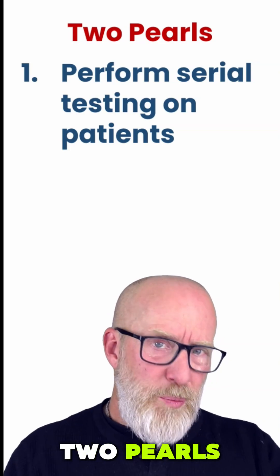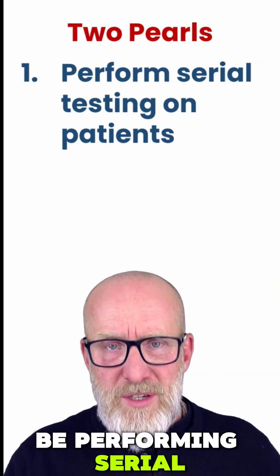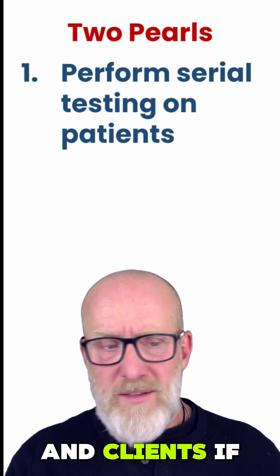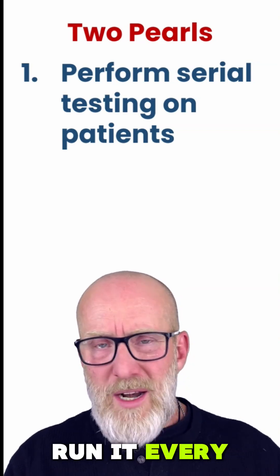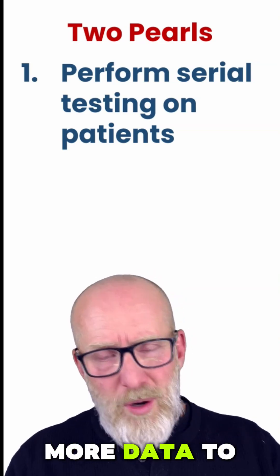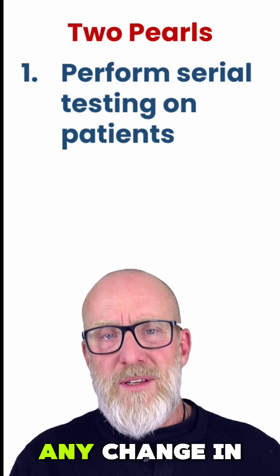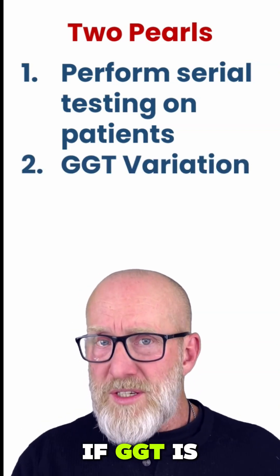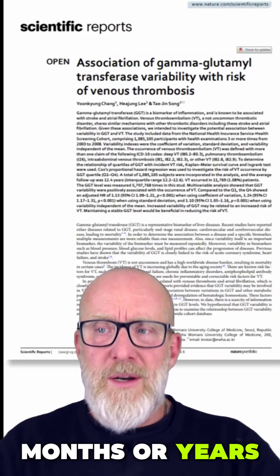Today's content really has two pearls. One is that we really should be performing serial testing on all of our patients and clients. If you're running a blood chemistry test and you're working with somebody, run it every few months, because that gives you more data to track in order to see if there's any change — like, for example, if GGT is varying over the months or years.